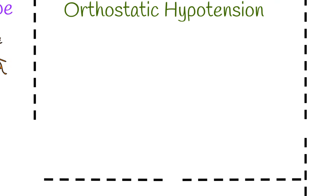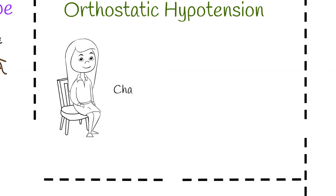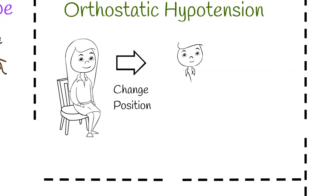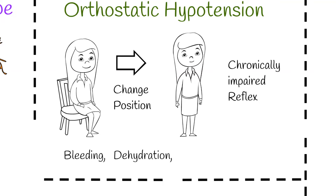Orthostatic hypotension is due to a drop in blood pressure when changing positions, such as when standing up. It happens because homeostatic reflexes are chronically impaired. Orthostatic hypotension can be associated with bleeding, dehydration, or significant infection.